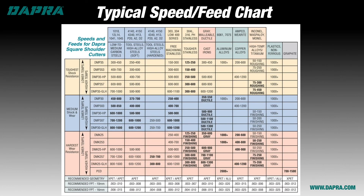Notice on this speed and feed chart that the different grades of available carbide are shown in increasing degrees of hardness from top to bottom. This is helpful in determining what speed and feed range is suitable for the material being machined, and for knowing a good typical first choice grade. The best typical first choice of carbide grade for a material is shown in bold text for the speed numbers, while other available grades are not in bold. This helps take some of the guesswork out of grade selection. The first choice isn't always the best one, but it's a good bet that you'll be close.